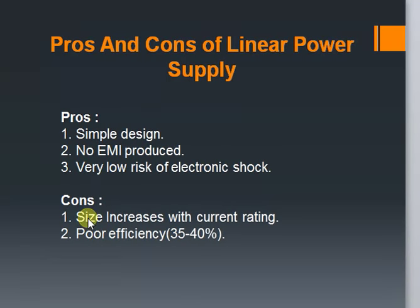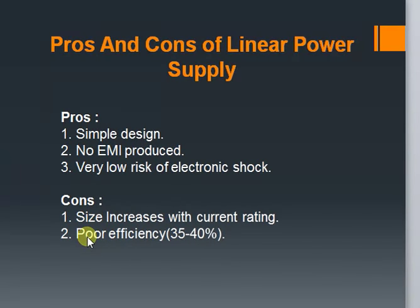Now the cons: size increases with current ratings — as the current rating increases, the size and weight of the transformer increases significantly, causing the system to become bulky. For example, a 2A transformer can weigh up to 2 kg. Second, poor efficiency — the linear power supply works on the principle of dissipating excess voltage as heat, which decreases efficiency significantly. Typically the efficiency of a linear power supply is about 35 to 40%.